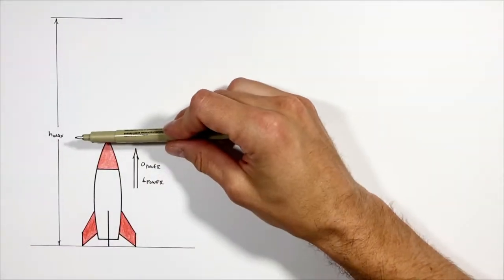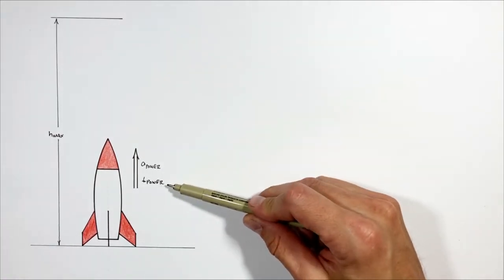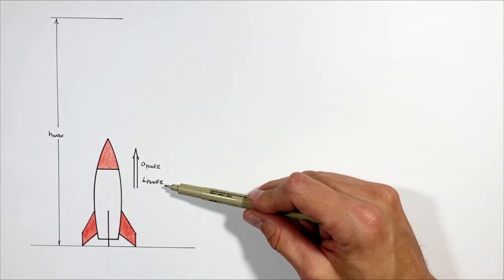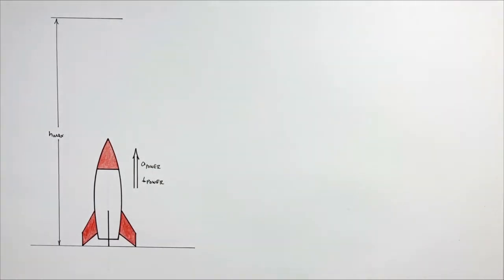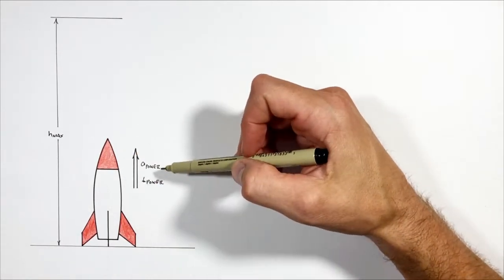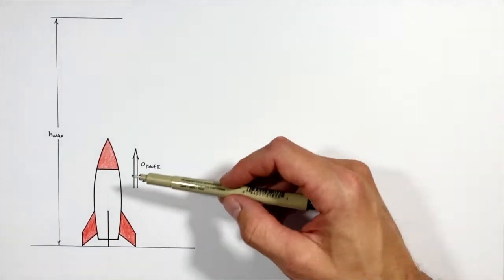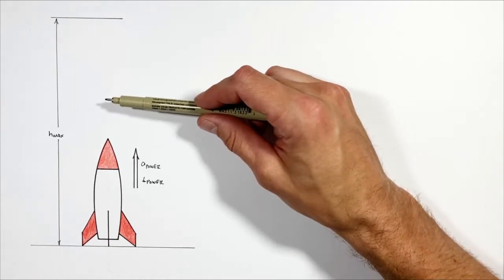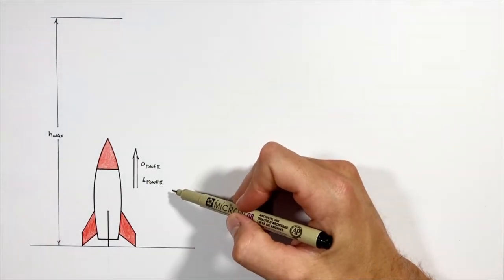I'm going to call that maximum height h_max. This rocket is going to accelerate under its own power for some certain amount of time, so it has some acceleration a_power, and that acceleration is going to exist for some amount of time t_power. When the engine cuts out, the rocket isn't immediately going to stop — it has built up upward velocity, so it will continue to coast upward to the maximum height before coming back down.